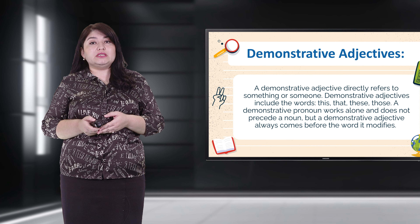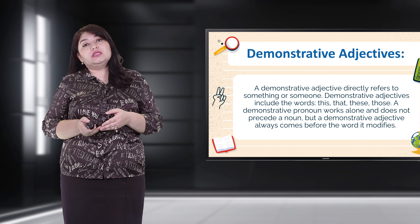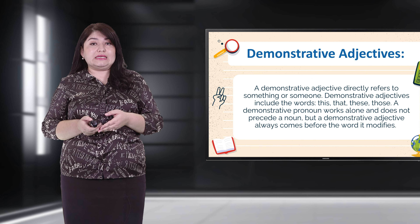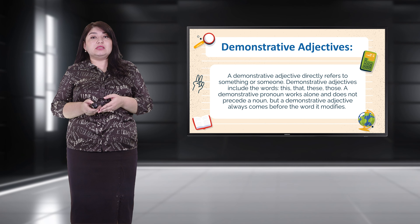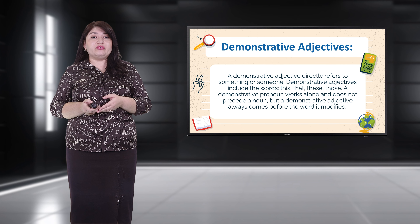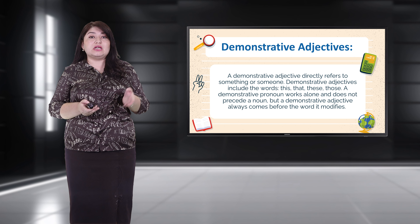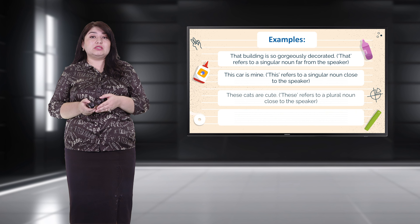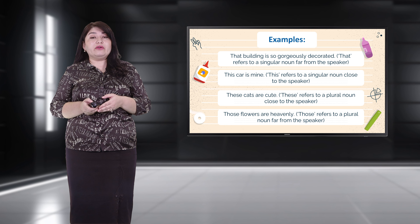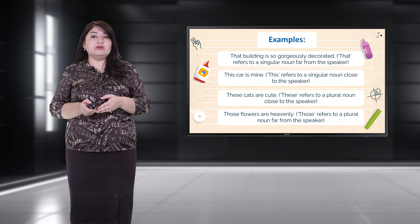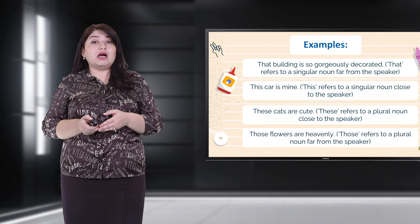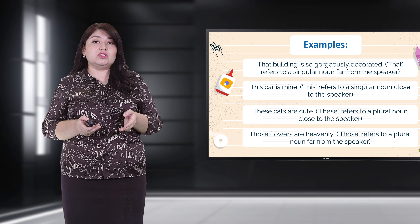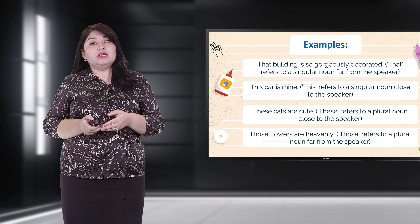Demonstrative adjectives directly refer to something or someone. They include the words this, that, these, or those. A demonstrative pronoun works alone and doesn't precede a noun, but a demonstrative adjective always comes before the word it modifies. For example: 'That building is so gorgeously decorated' — 'that' refers to a singular noun far from the speaker. 'This curve is mine' — 'this' refers to a singular noun close to the speaker. 'These cats are cute' — plural, close. 'Those flowers are heavenly' — plural, far.